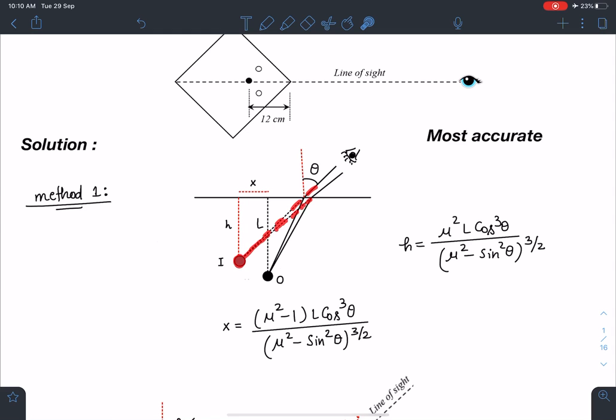That means compared to standard case of normal incidence where only this apparent depth changes, this image shifts along the surface as well.